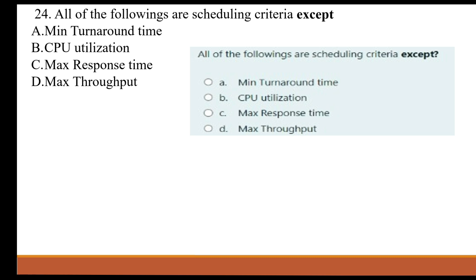All of the following are scheduling criteria except: A. Minimum turnaround time. B. CPU utilization. C. Maximum response time. D. Maximum throughput.